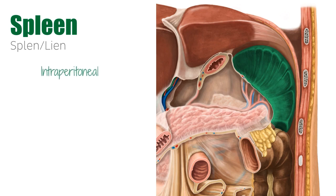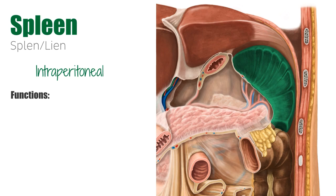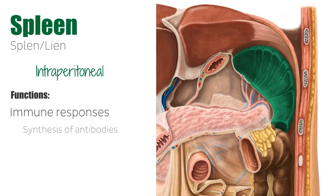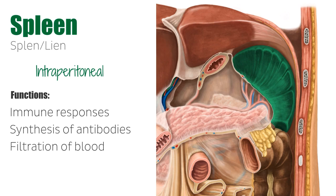It lies intraperitoneally in the left hypochondriac region between the 9th and 12th ribs, just inferior to the diaphragm, which we also see a little bit here on this image. This organ is surrounded by a layer of fibroelastic tissue and its main functions are associated to immune responses in our body, syntheses of antibodies, filtration of blood, lymphopoiesis, and phagocytosis.